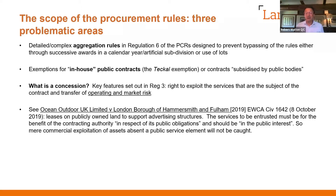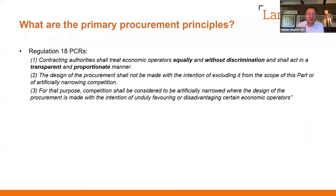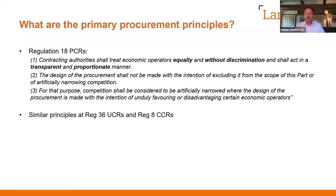The first line of that judgment noted quite rightly that the rules governing public procurement grow ever more complex. In terms of the primary principles, they're set out in Regulation 18: contracting authorities shall treat economic operators equally without discrimination and shall act in a transparent and proportionate manner. You can't artificially narrow down competition through the design of the procurement. Competition shall be considered artificially narrowed where the design of the procurement is made with the intention of unduly favouring or disadvantaging certain economic operators. Similar principles apply in both the utilities and concessions regulations.